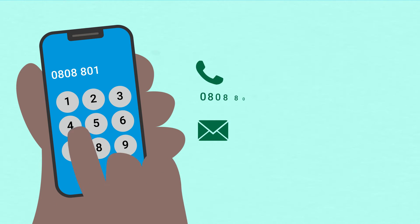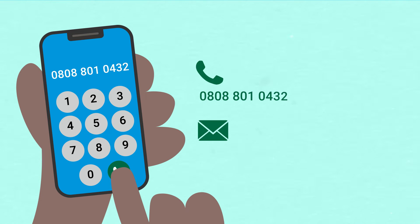If you need support, call the BEAT helpline on 0808 801 0432 or email scotlandhelp at beateatingdisorders.org.uk.